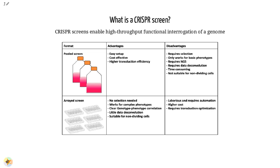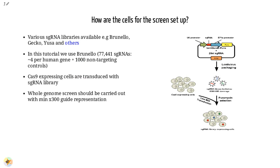Pooled or arrayed screens can be performed. In this tutorial we analyze data from a pooled screen. Various guide RNA libraries are available and can be purchased. In this tutorial we use Brunello, which is a human genome-wide CRISPR knockout library in a lentiguide vector.